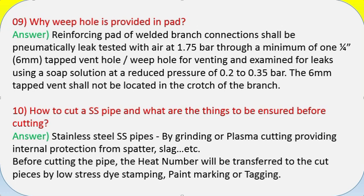Question 10: How to cut an SS pipe and what are the things to be ensured before cutting? Answer: Stainless steel pipes are cut by grinding or plasma cutting, providing internal protection from spatter, slag, etc. Before cutting the pipe, the heat number will be transferred to the cut pieces by low-stress die stamping, paint marking, or tagging.